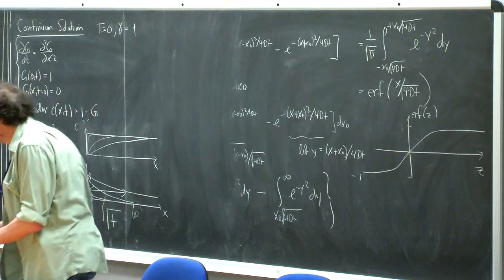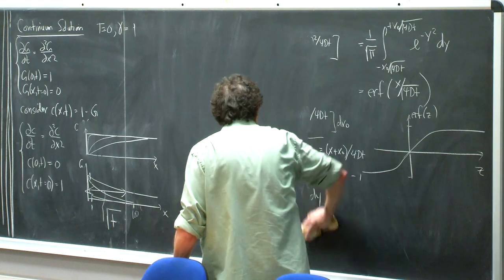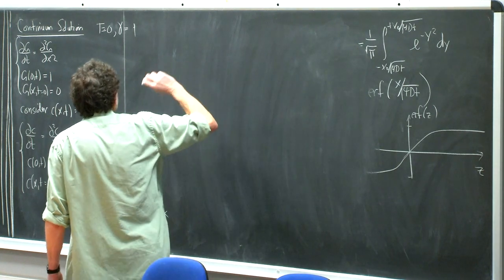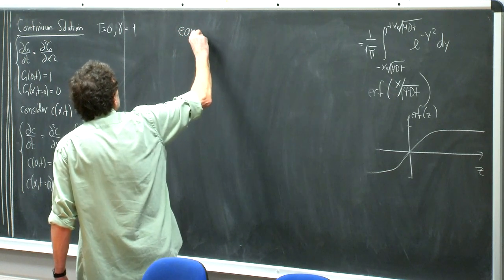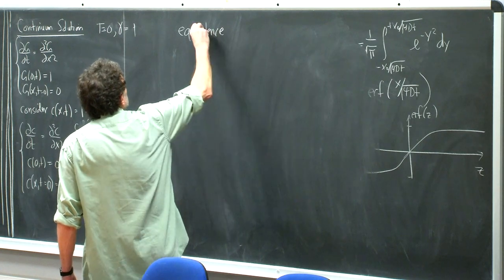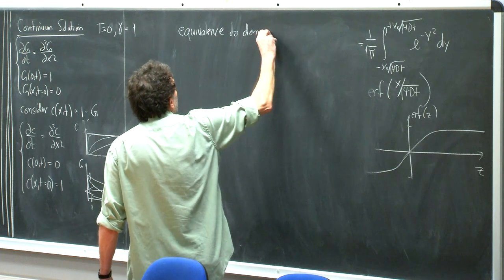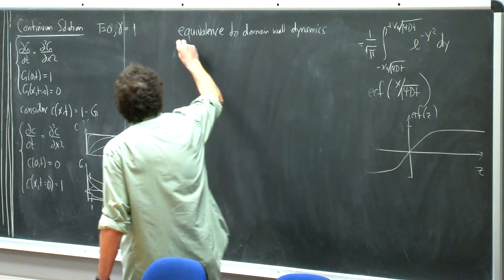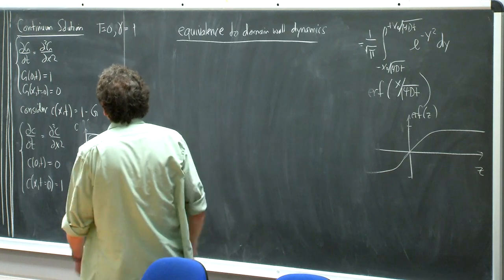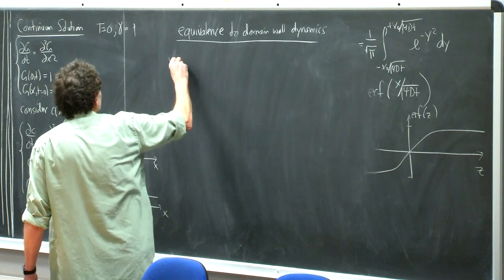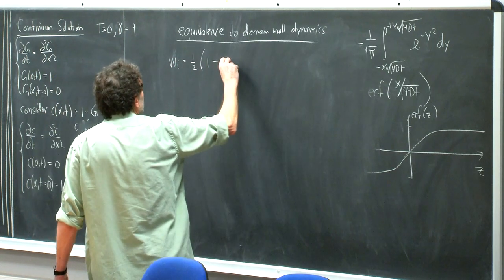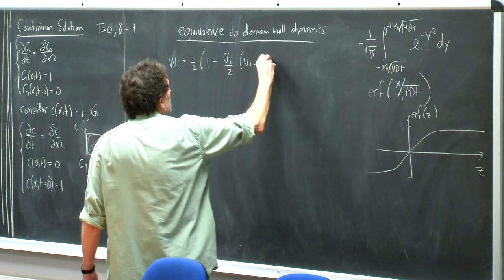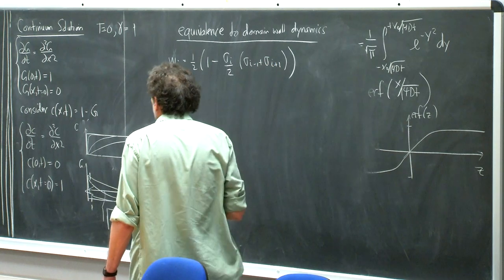Now let's look more pictorially at what we expect to see. This is the equivalence to domain wall dynamics. Let me write the flip rate again: w_i equals one-half times (1 minus sigma_i over 2 times (sigma_{i-1} plus sigma_{i+1})). We're looking at the zero temperature limit, ignoring the gamma factor.